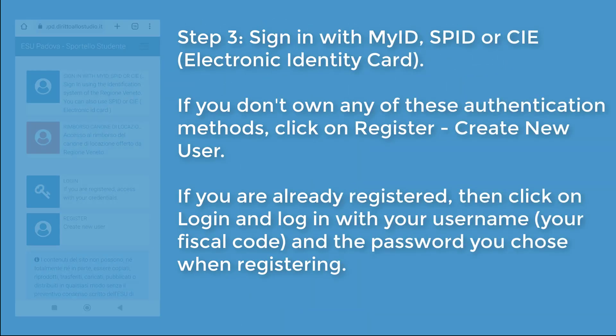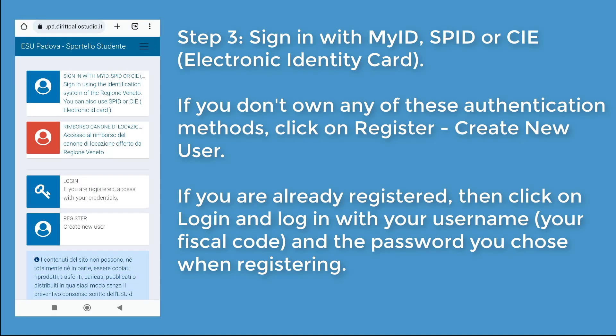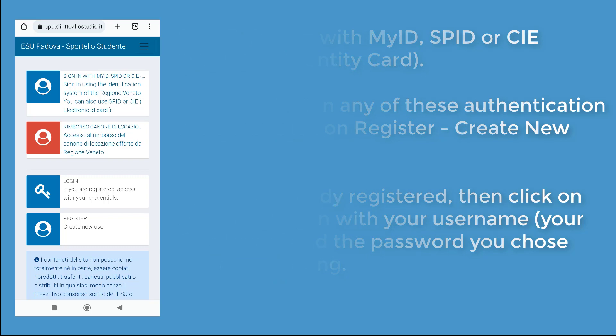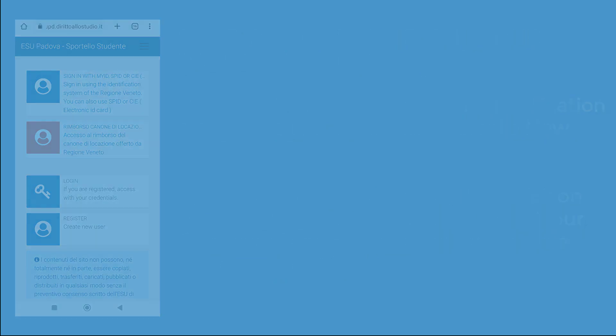Click on Sign in with MyID, SPID, or CIE electronic identity card. If you don't own any of these authentication methods, click on Register and then Create new user.